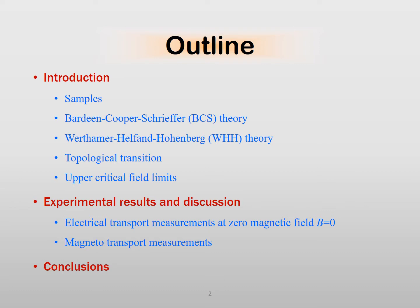The outline of my talk is the following. First, I'm going to describe the samples. I shall mention some basic theoretical background, namely the BCS theory and the Werthamer-Helfand-Hohenberg, WHH for short, theory. I shall talk about topological transitions and upper critical magnetic field limits. I'm going to present our experimental results both at zero magnetic field and in the magnetic field. Finally, I'll summarize our results.